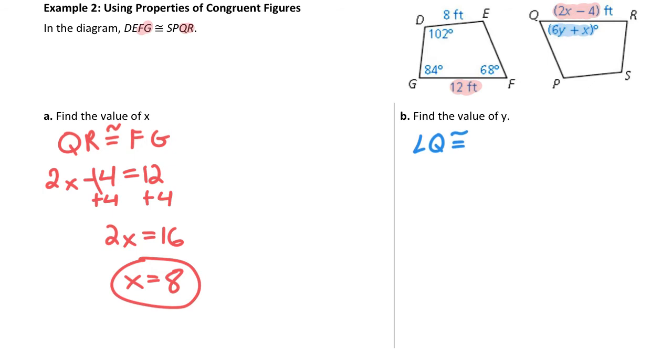this expression 6y plus x is really angle Q. Now in our congruence statement, Q is third, F is third, meaning Q and F are congruent. So the equation I write is 6y plus x equals angle F, which is 68.